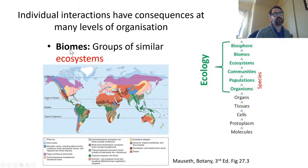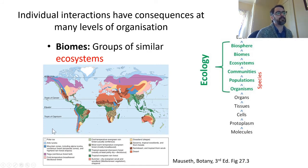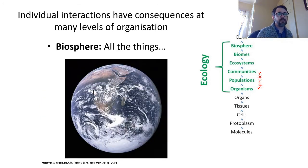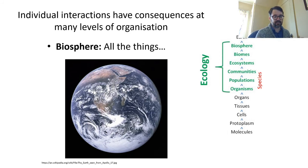Biomes are just groups of similar ecosystems — the concept is somewhat similar to the species concept in that we define biomes based on shared characteristics. For example, the boreal forest or taiga is found across northern North America including Indiana, and also across northern Europe and Russia. Indiana also has temperate forest and some grassland. The biosphere includes everything — atmosphere, space radiation — but we won't cover that much in this class.